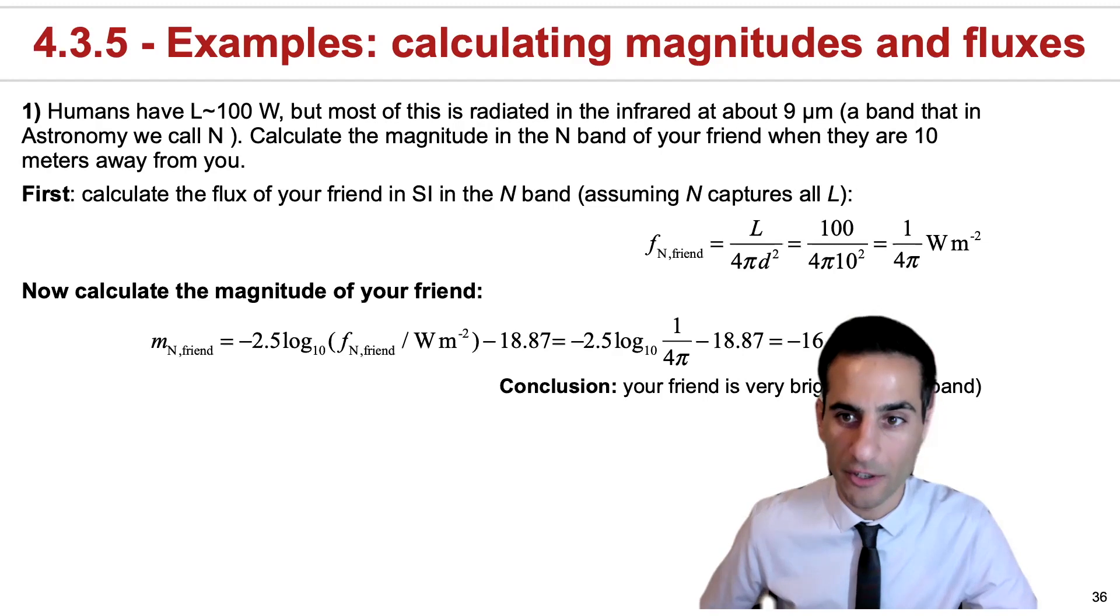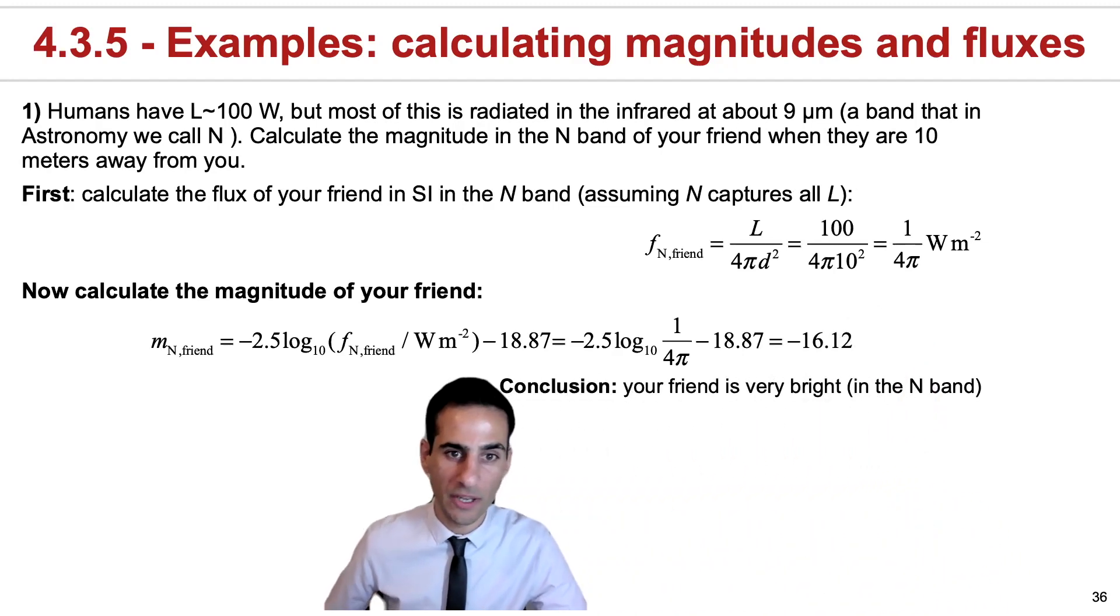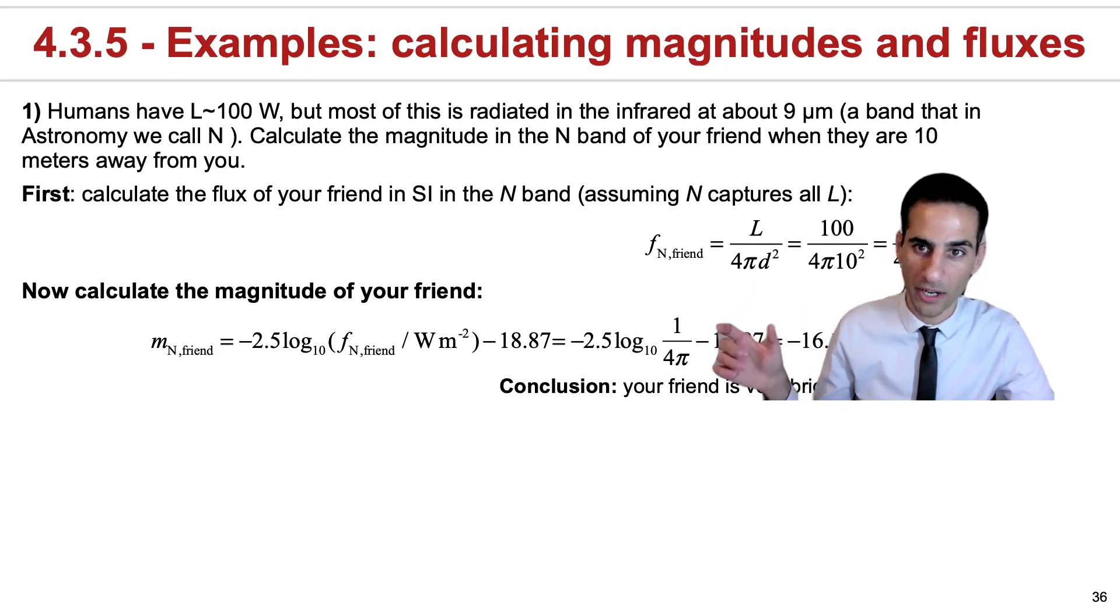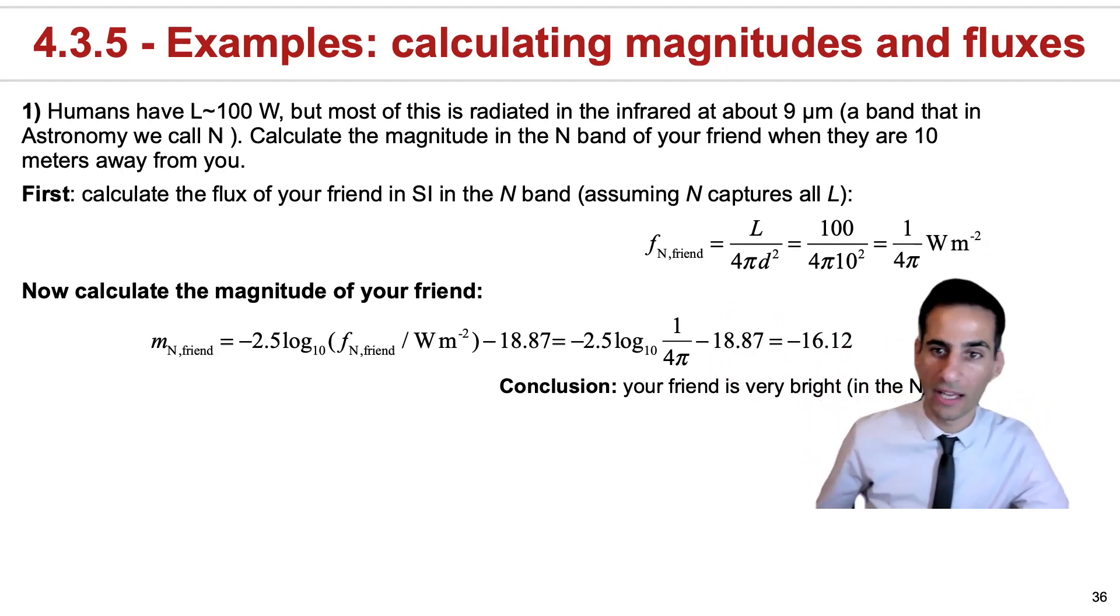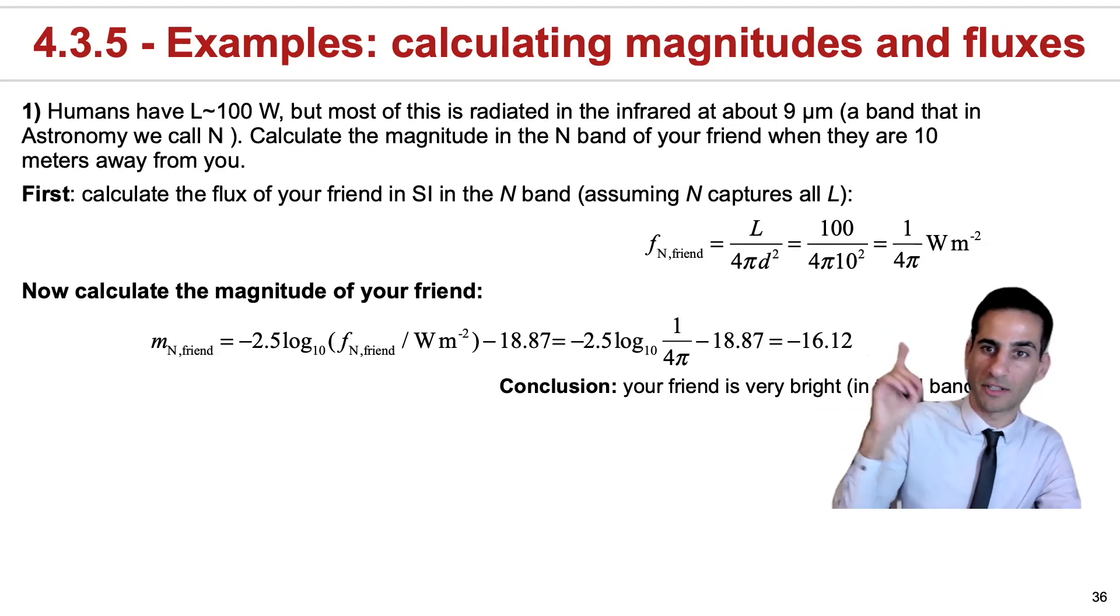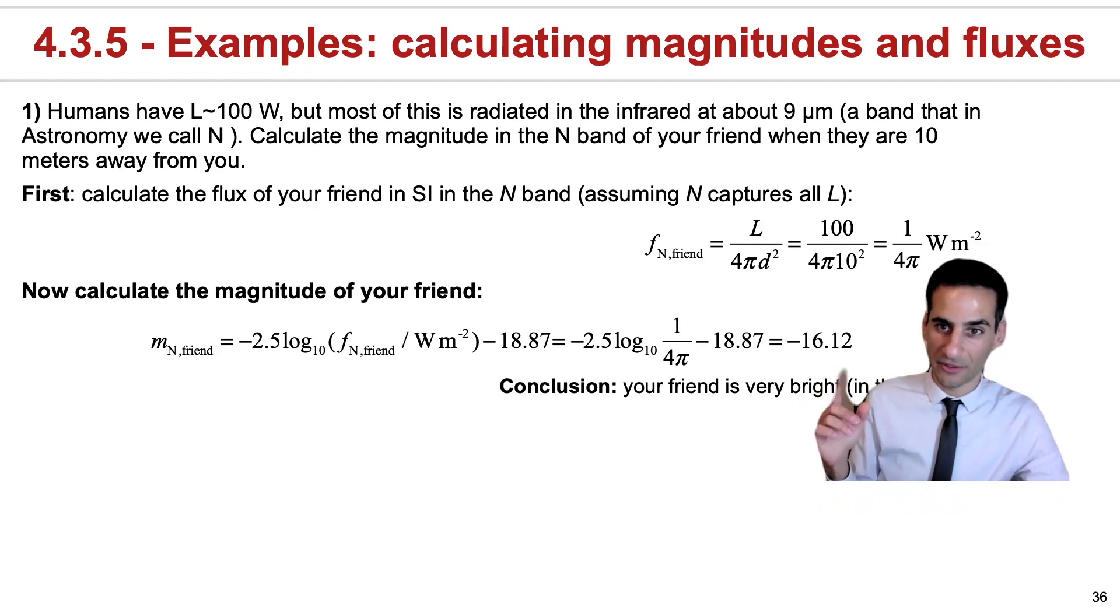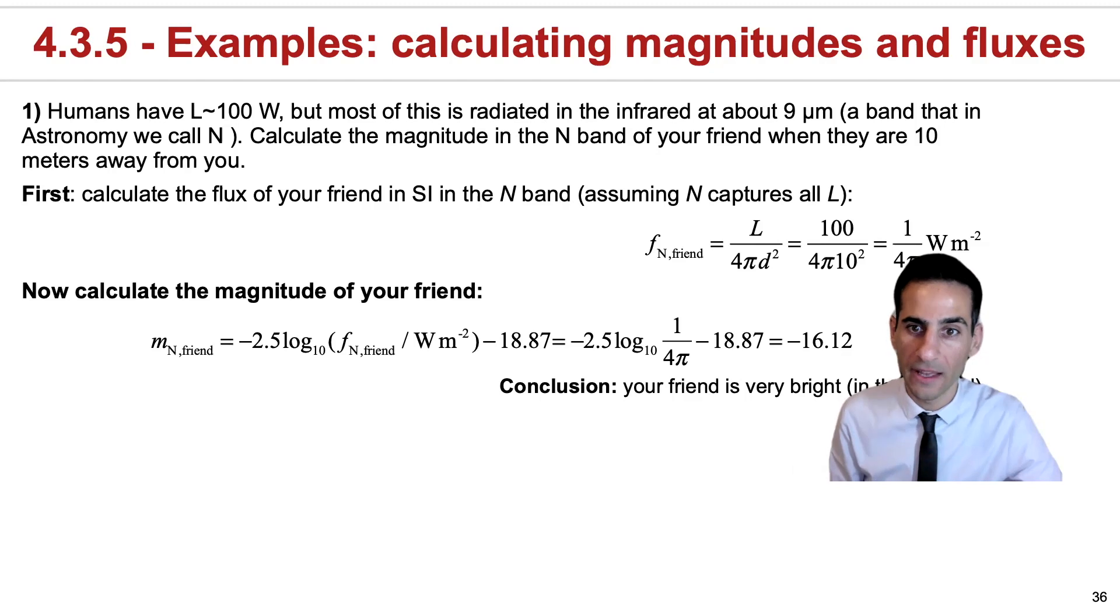So how do we do this? Well, very simply, if we want to use this equation here in the Vega system, we need to know what is the flux, in this case, of your friend in the international system, because what we have is human luminosity, which is 100 watts. You need to divide by 4πd², where d in this case is 10 meters, so that ends up being 100, and the flux that we will measure is 1 over 4π watts per meter squared. If you plug it in, then you realize that a friend of yours at sort of room temperature 10 meters away at the 9 micron band, which in astronomy is called the N band, has quite a low magnitude.